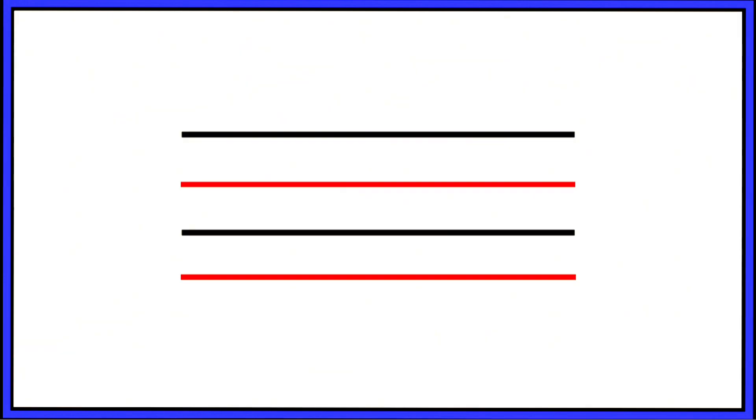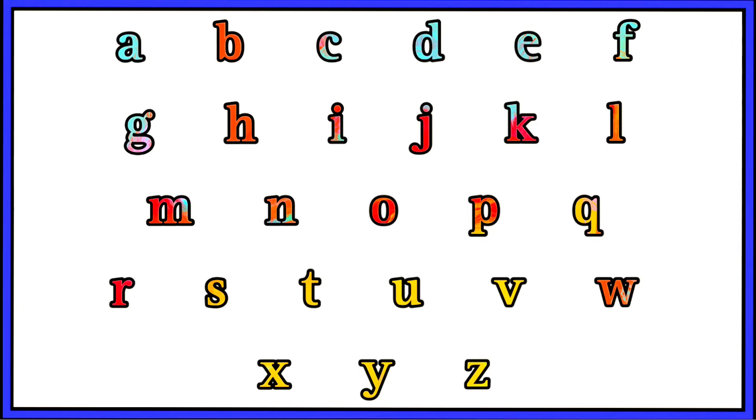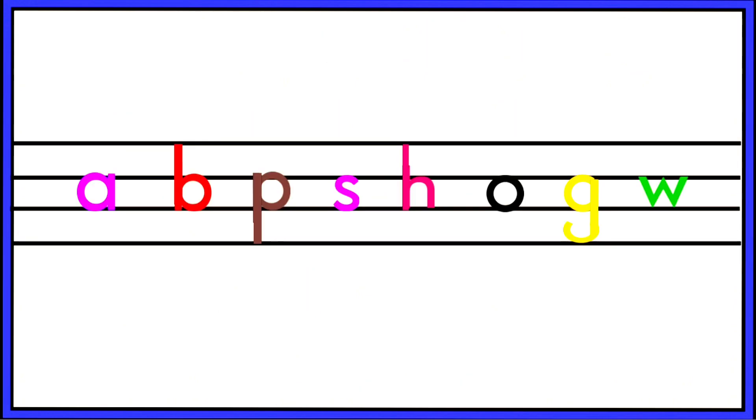First of all, we will learn the concept of four lines. There are 26 letters in English alphabets. The formation of letters always consists of four lines.